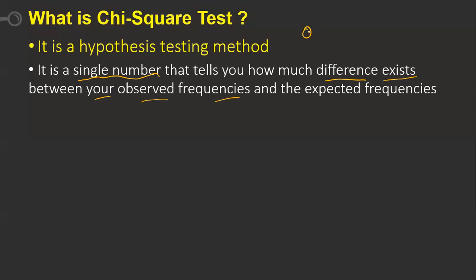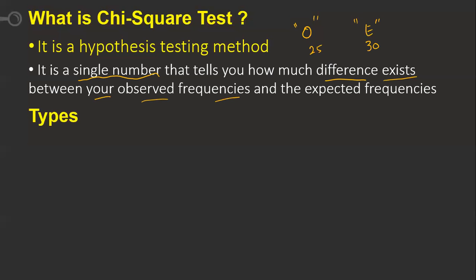I'll call observed frequencies 'O' and we are going to calculate expected frequencies 'E'. For example, if I am observing 25 marks but expecting 30 marks, the chi-square test tells us whether there is any significant difference between these two values.